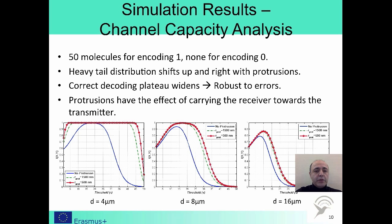Now let's look at what happens to channel capacity. We modulate binary one using 50 molecules and binary zero by not sending anything. In the graphs, the blue curve represents the regular case without protrusions, the green curve is for the thick protrusions, and the red curve is for the thin protrusions. In the leftmost graph, we observe that utilizing protrusions provides a wide plateau for correct decoding, giving you a better chance of picking the optimal threshold and therefore being robust to errors. As the distance between the transmitter and receiver increases, the benefit of protrusions decreases, but it's still much better than not using protrusions at all. This is a result of the fact that protrusions have the effect of carrying the receiver towards the transmitter.